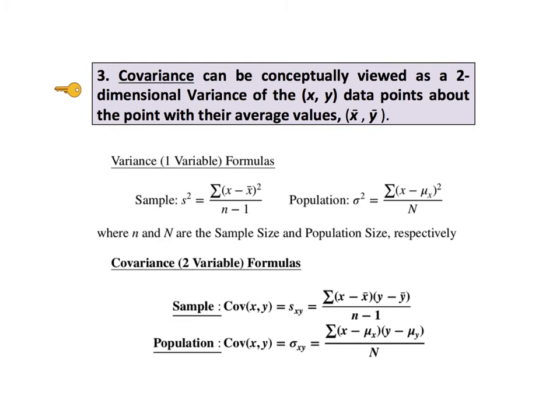So we can think of covariance as a two-variable counterpart to the variance. Covariance is a measure of variation with two variable data points, that is, x, y data. The variation is calculated from the point made up of the mean of x and the mean of y, that is the point x bar, y bar. And here are the formulas for the covariance.